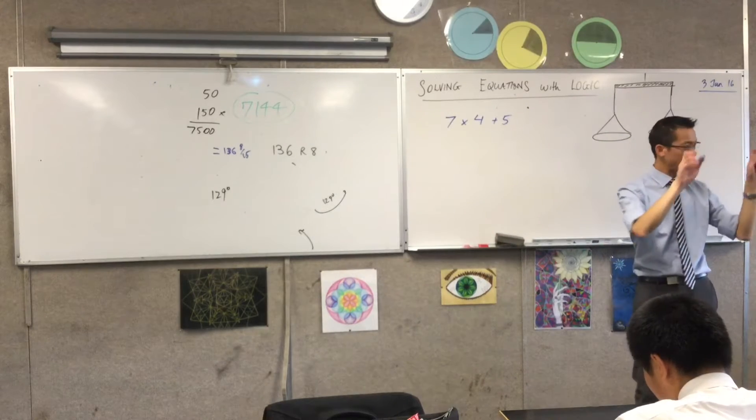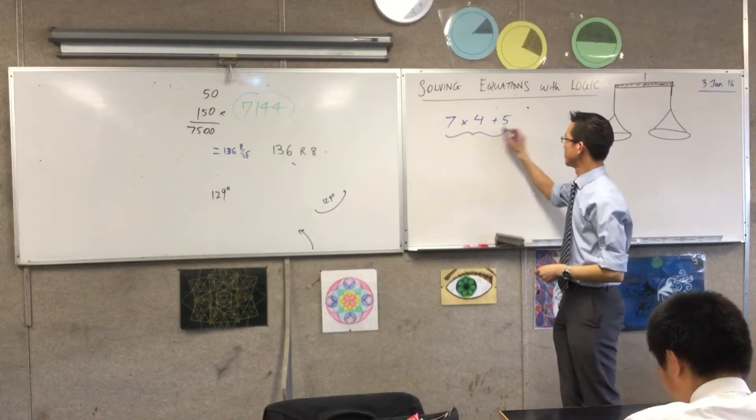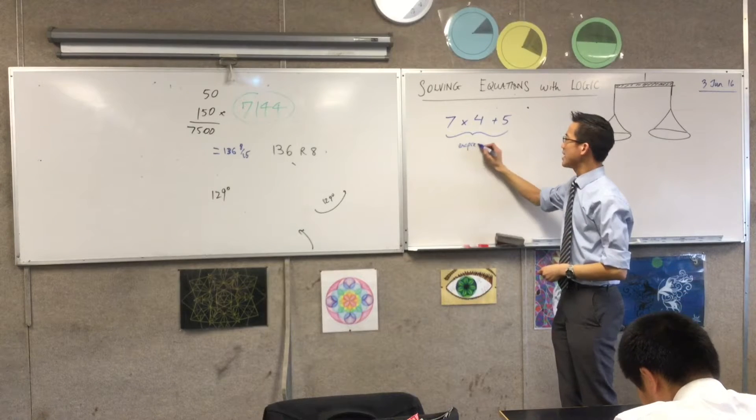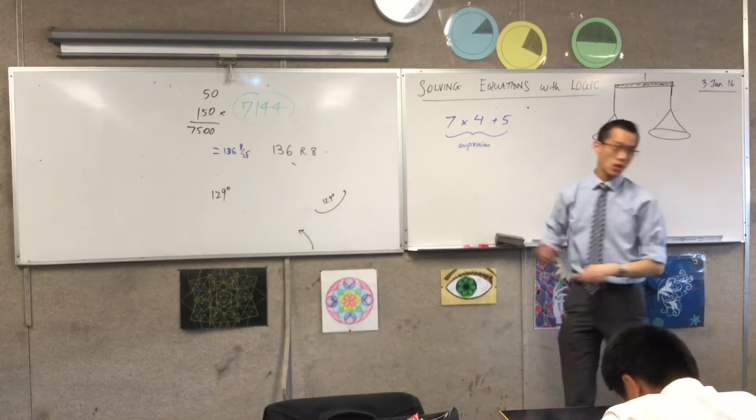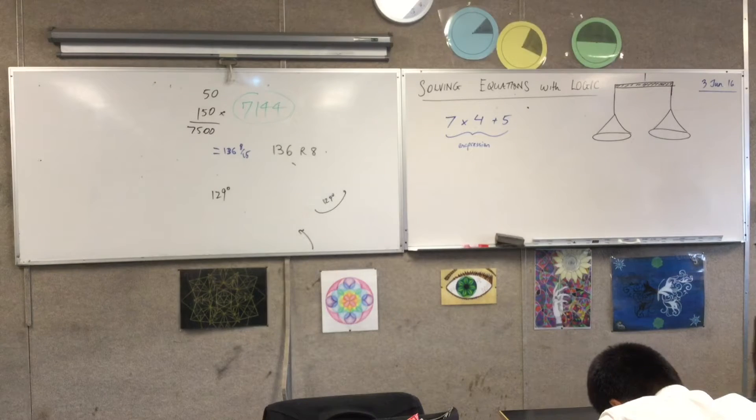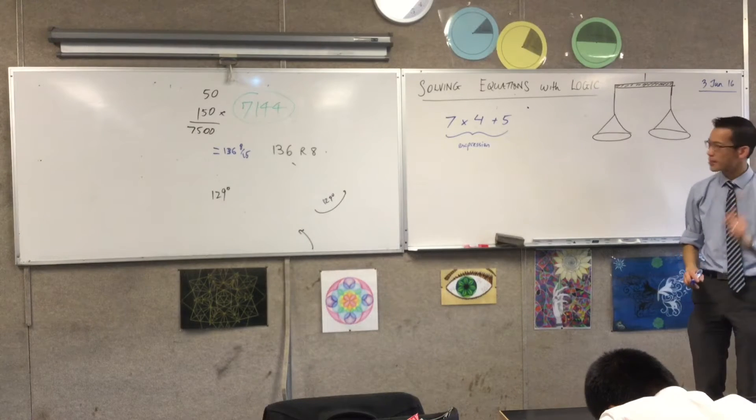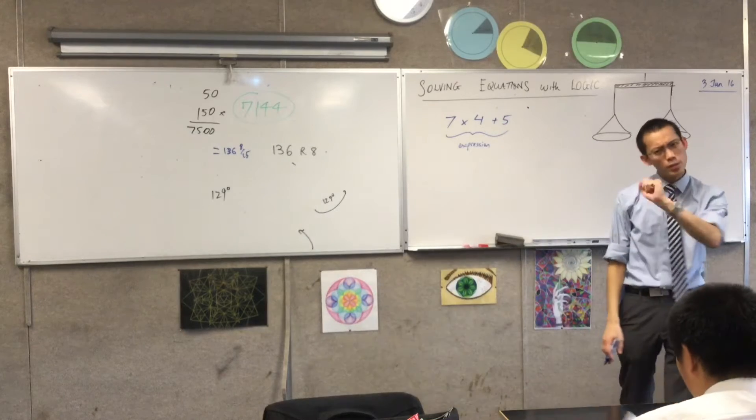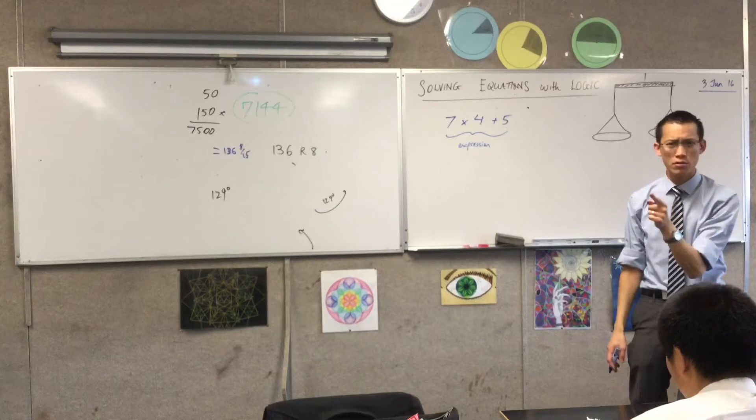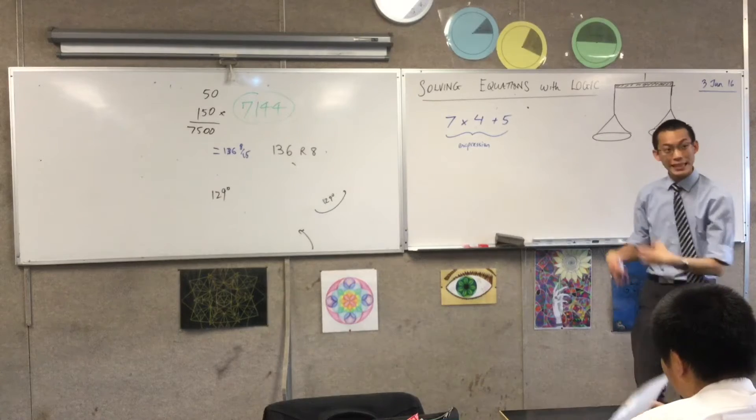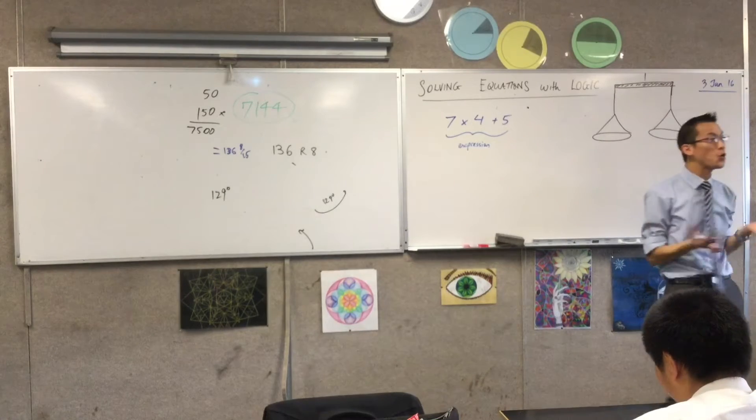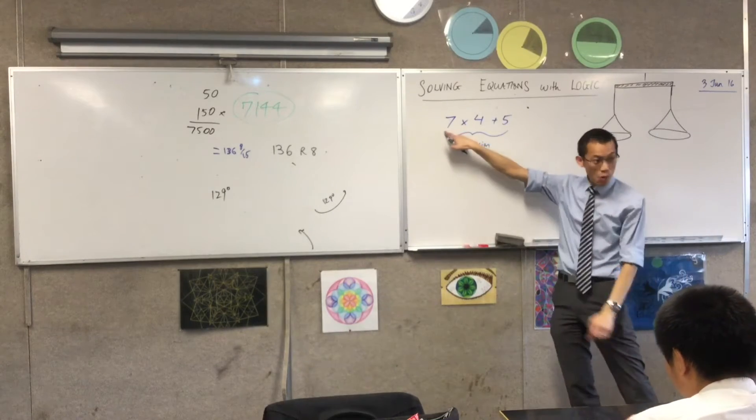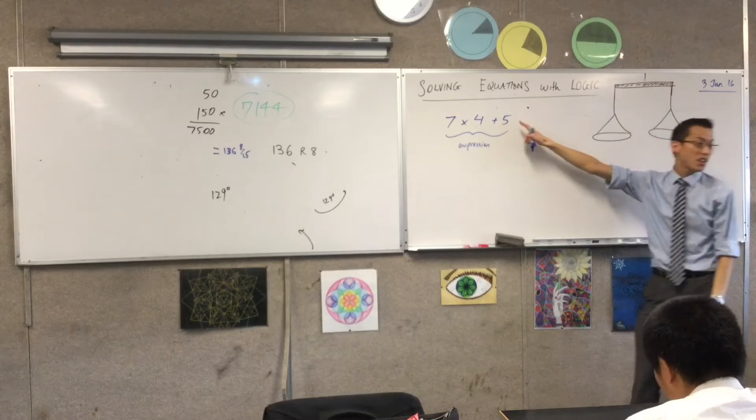This is called an expression. It says something, and it says it with numbers. There isn't any algebra yet, because what I've got here, I know what all these numbers are. But I know what 7 is, I know what 4 is, and I know what 5 is.